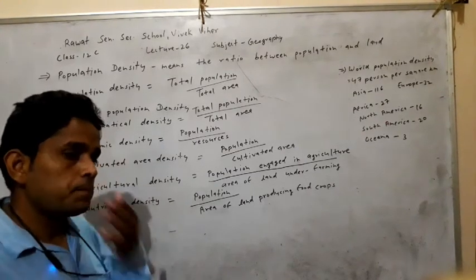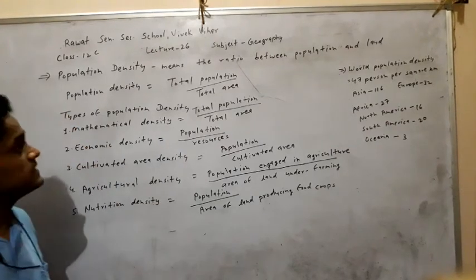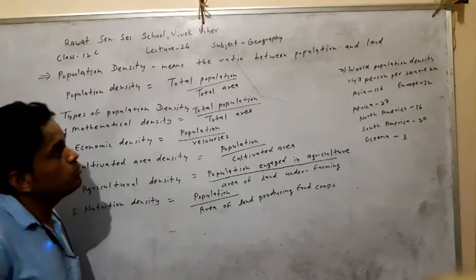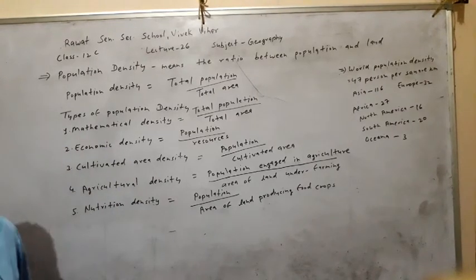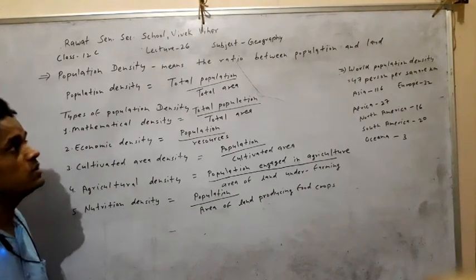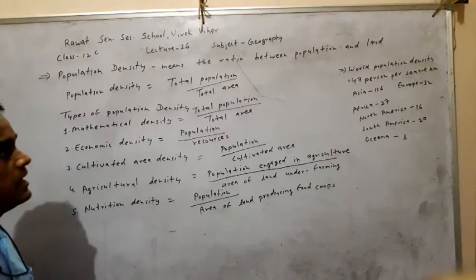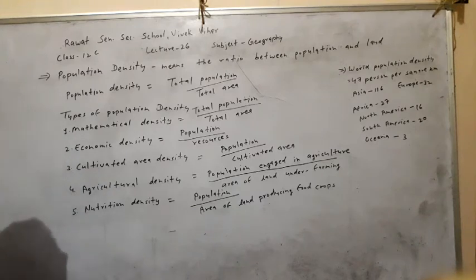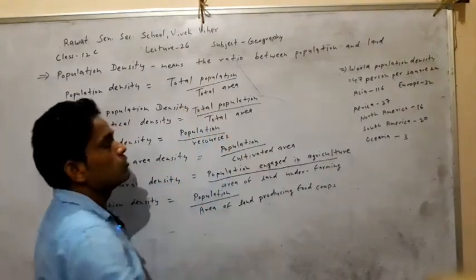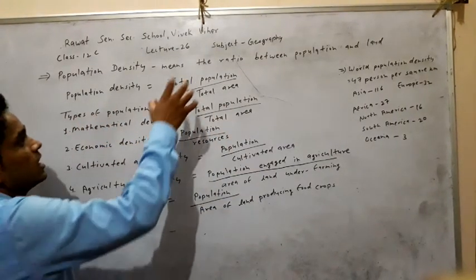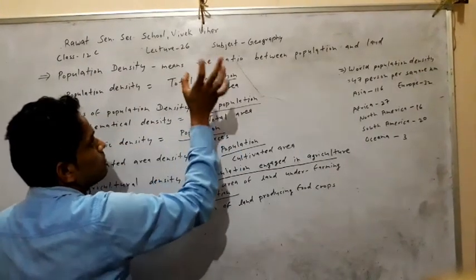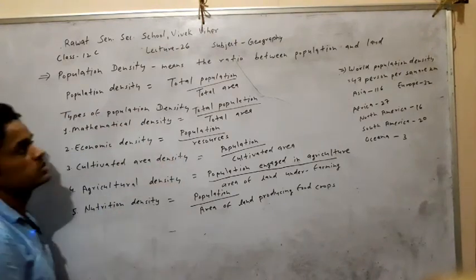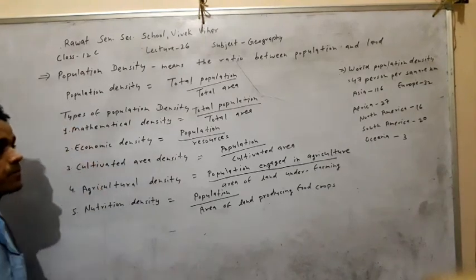Good morning students. New topic: population density, in chapter number three. Population density means the ratio between population and land. Population density emphasizes the total population size and the total region — the ratio between total population and total area, or ratio between total number of persons and the total region.